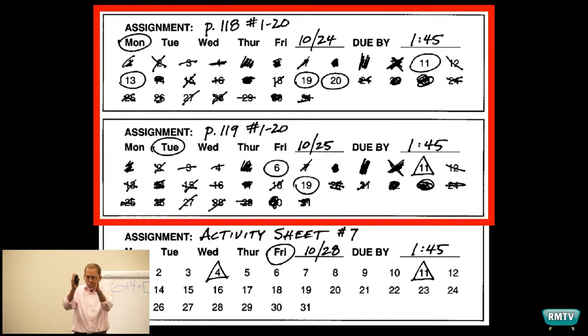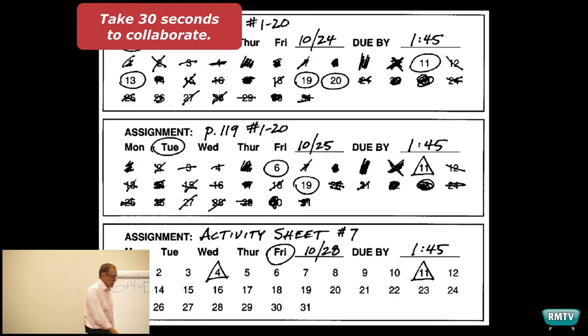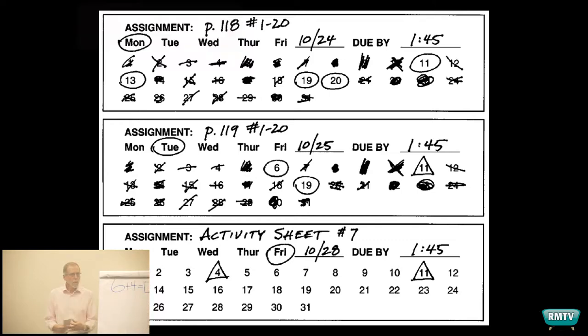If you can only go see one student right now as they're beginning, we'll take 30 seconds and figure out who would you go see. 30 seconds. We're going to see several students. Who would I see first? I just want one number from you. That's all I want.